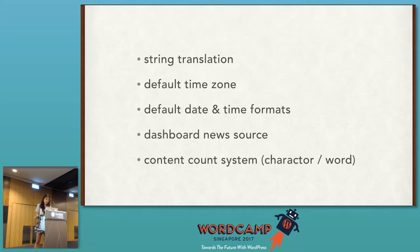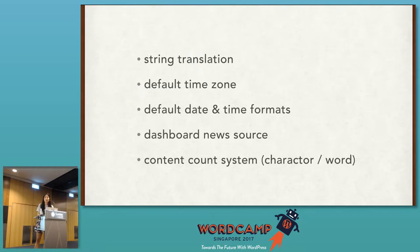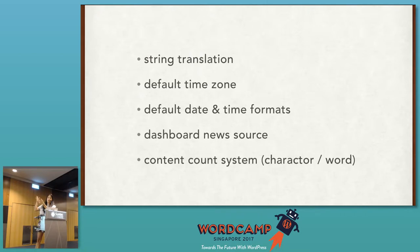The language file settings are not only about translation — they have a lot of settings for language and country. For example, default time zone. The language file specifies not only language but also location. The Japanese language code is just 'JA', but for English used in the US, the language code should be 'en_US', because English is used by many countries. The language file also has localized settings like time zone, date and time format, and news source. When you see the dashboard, WordPress news appears, and the translation file defines the source of that news.